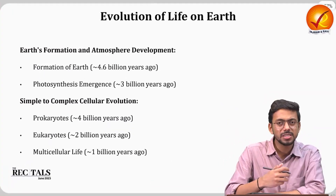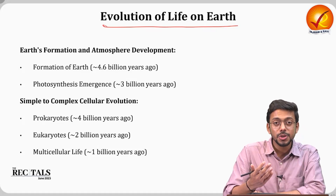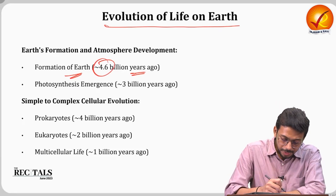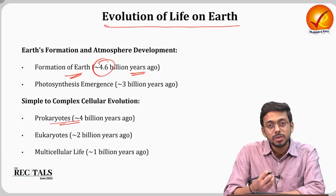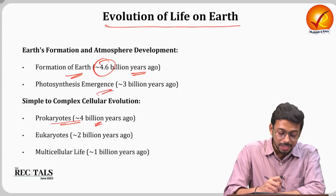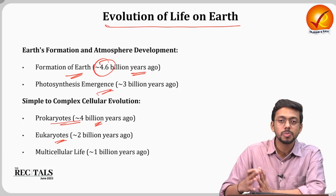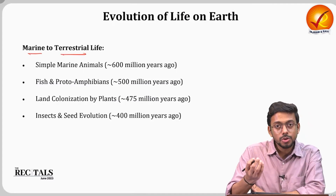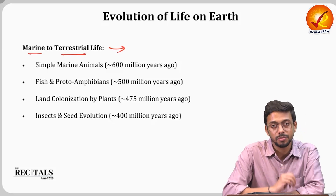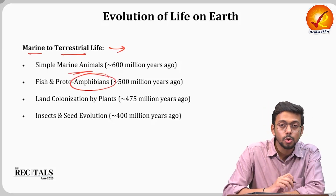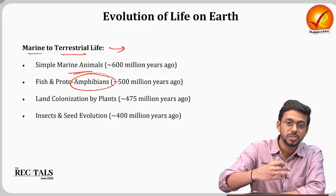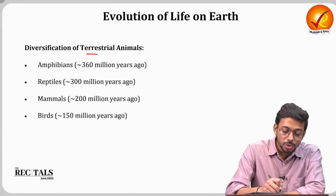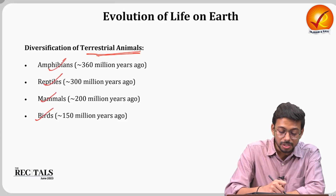Let's take a glance at the evolution of life on Earth. Earth formed 4.6 billion years ago. The first organisms were prokaryotes — the simplest ones. Then photosynthesis began, and prokaryotes evolved into eukaryotes. Multicellular life started emerging. Life then moved from marine to terrestrial environments — simple marine animals, then amphibians that could live both in water and on land, then plants colonizing land, insects, and seed evolution.